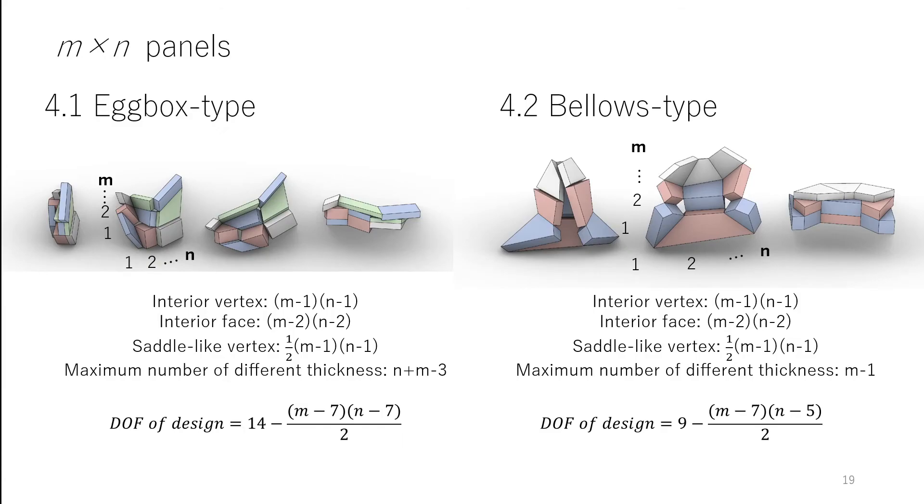Next, we consider the DOF of design of the mesh with m×n quadrangle panels. The DOF of design of eggbox and bellows type is shown in the bottom.